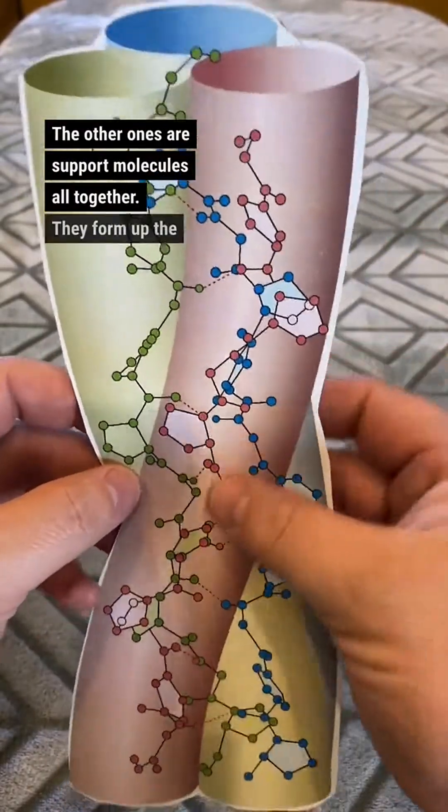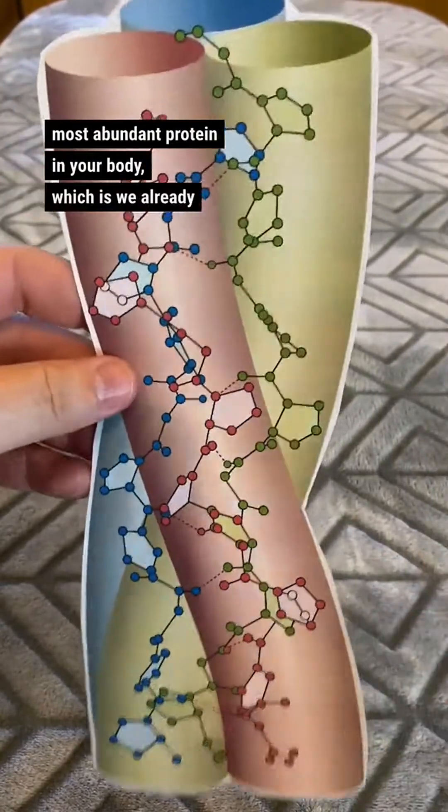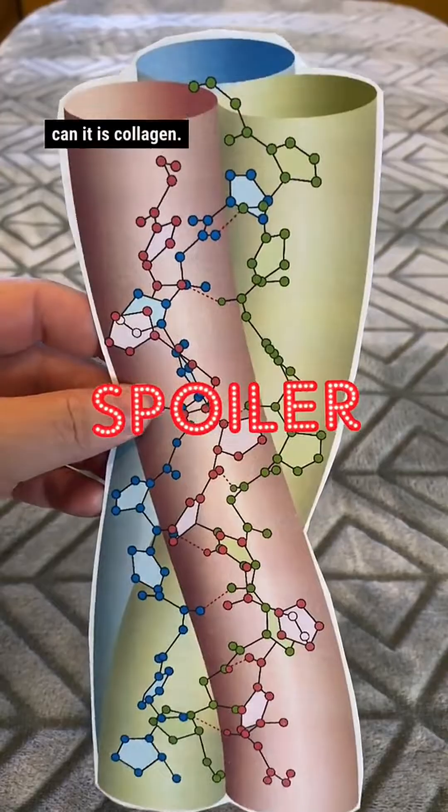Altogether, they form up the most abundant protein in your body, which is, we already said it, a spoiler, damn it, is collagen.